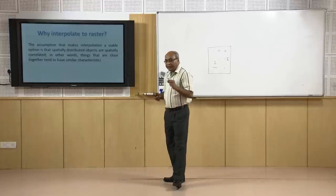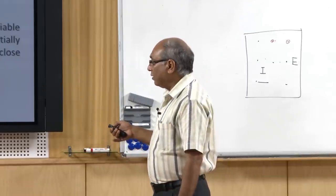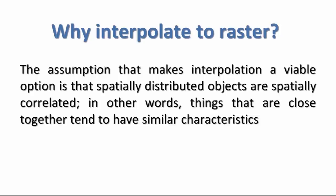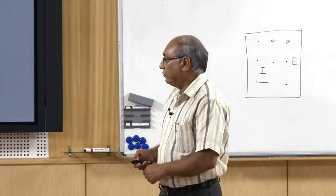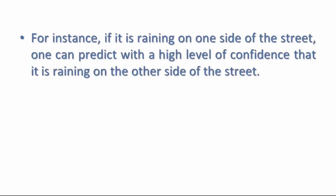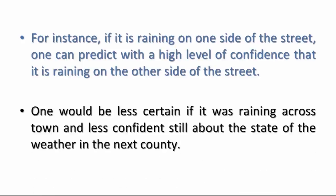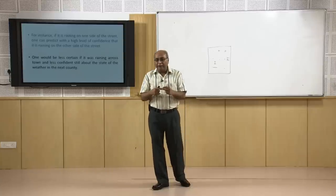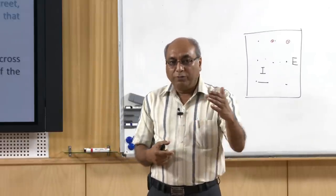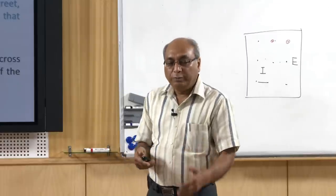The major assumption that makes interpolation a viable option is that spatially distributed objects are spatially correlated — things close together tend to have similar characteristics. This is Tobler's law of geography. For instance, if it is raining on one side of the street, one can predict with high confidence that it is raining on the other side, but one would be less certain about weather across town or in the next country.